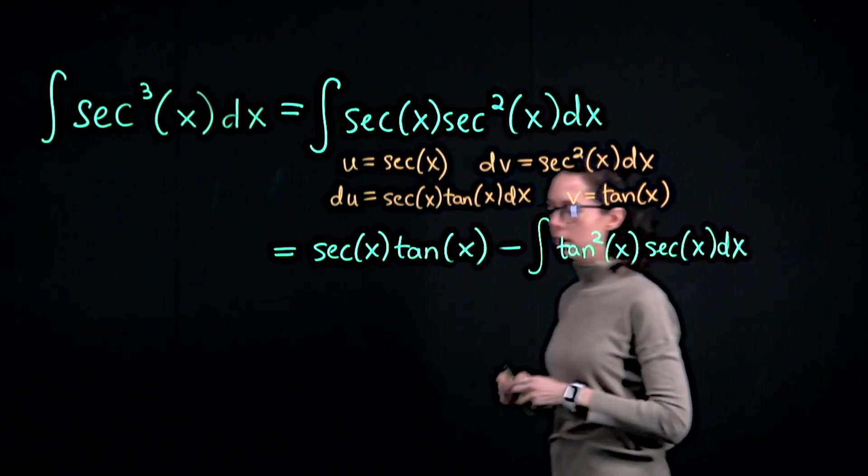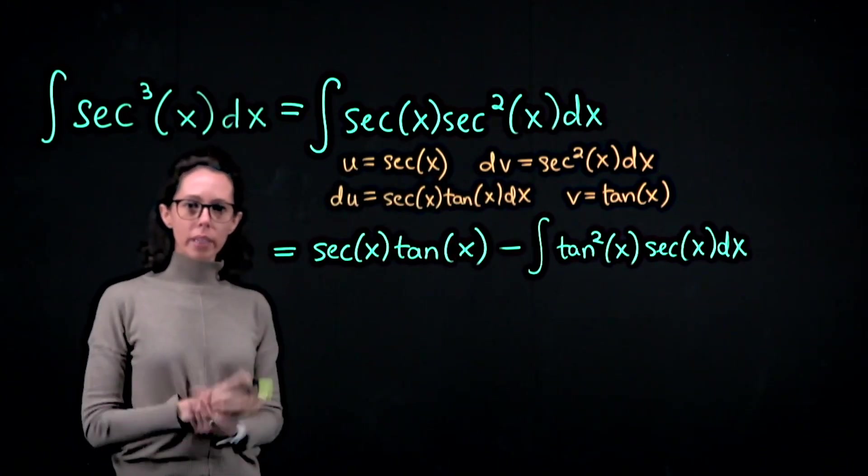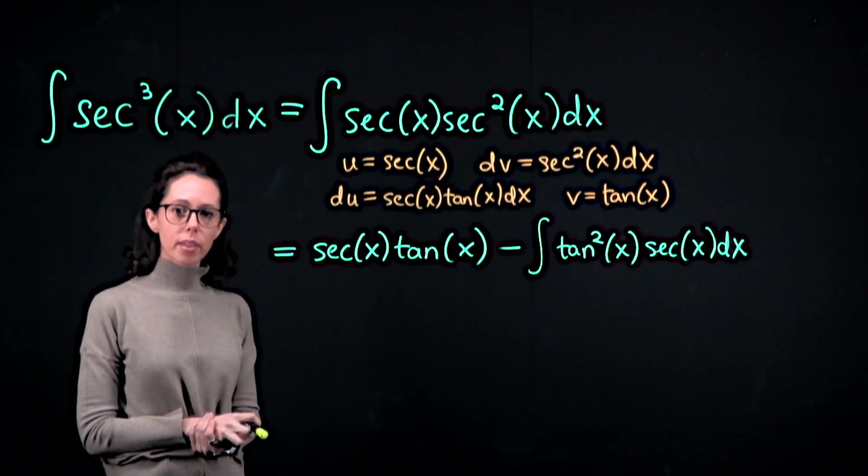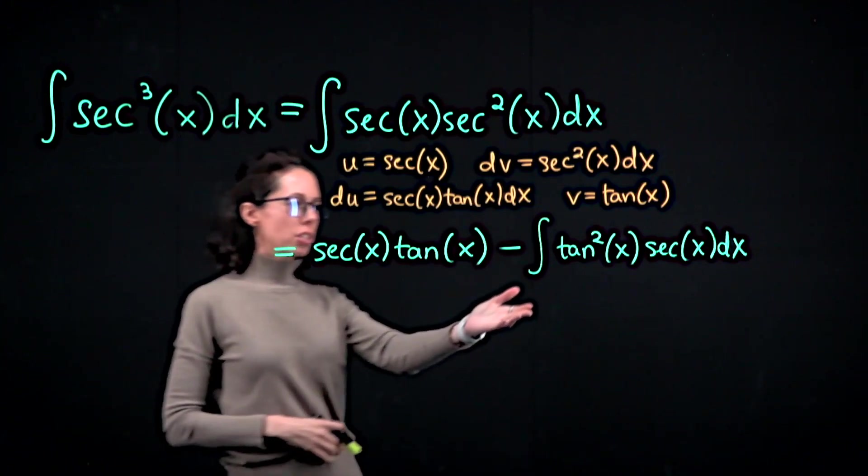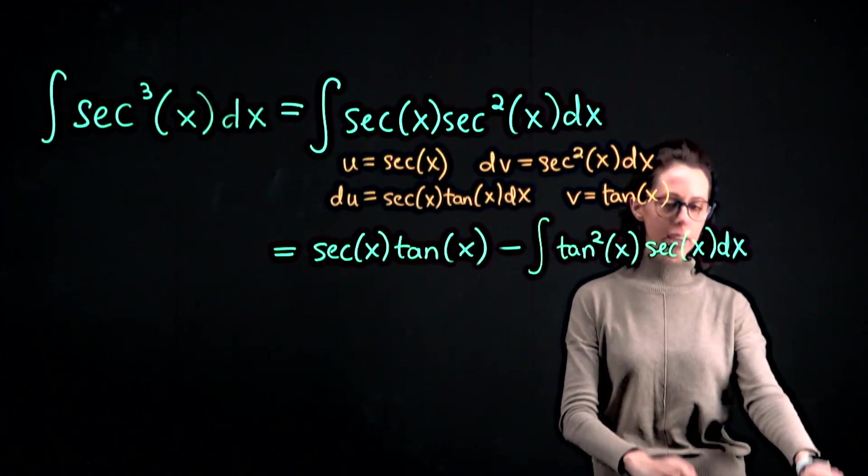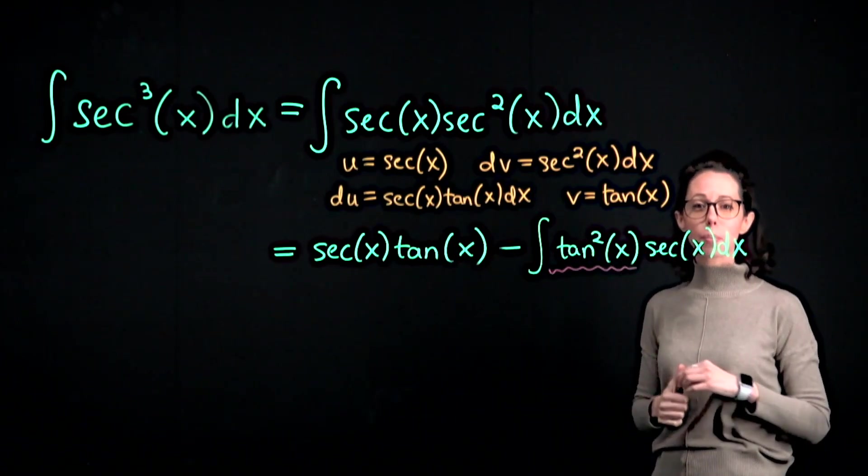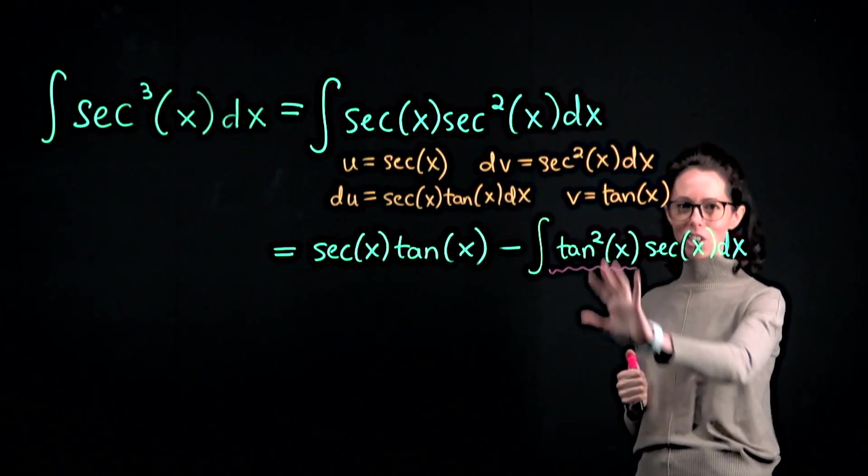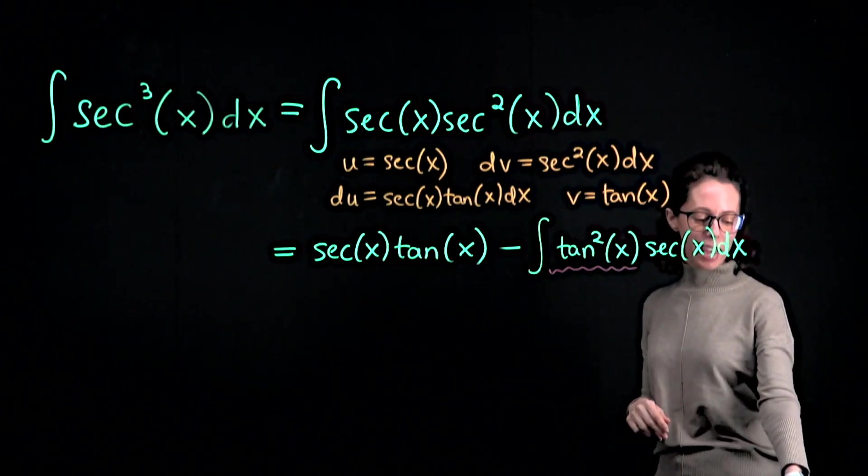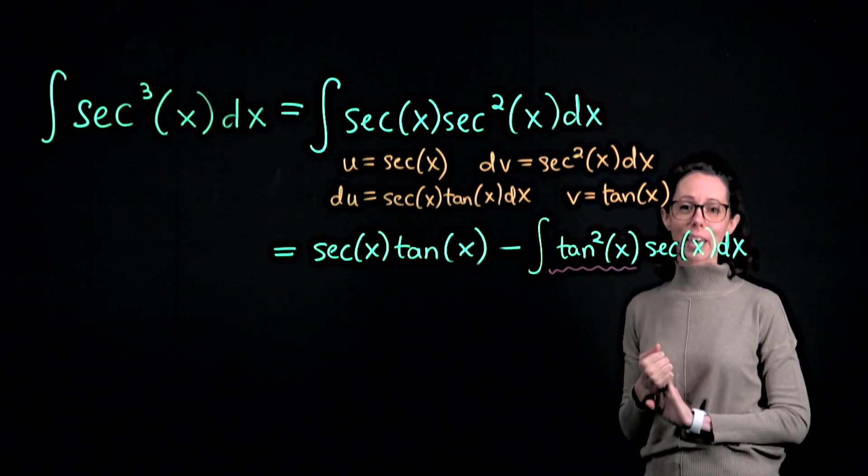Okay, we've done the only integration by parts that we're going to need to do in this computation. The rest of it is going to come down to a Pythagorean identity. So take a moment, you can pause this where we have the square of the tangent function, replace that appropriately with an expression that should involve some ones and secants.